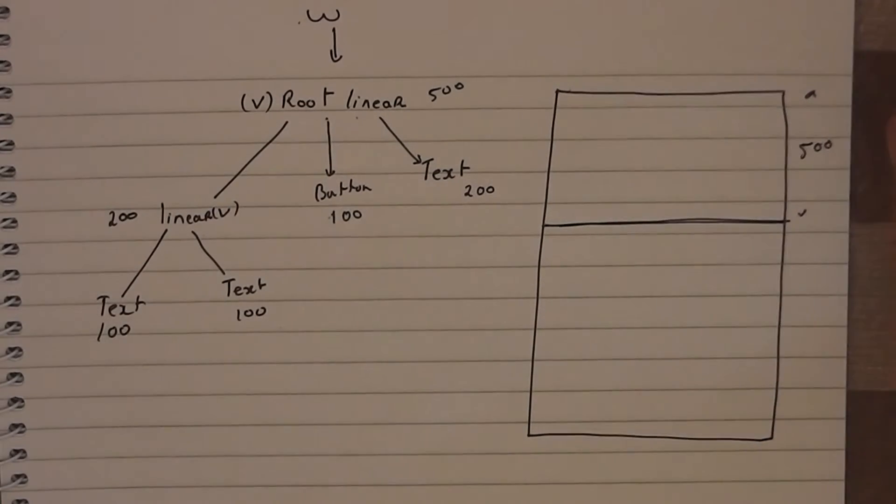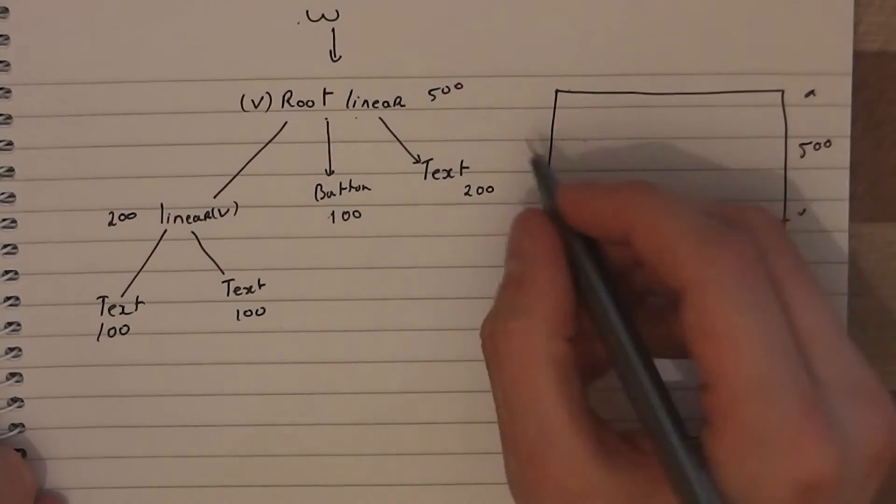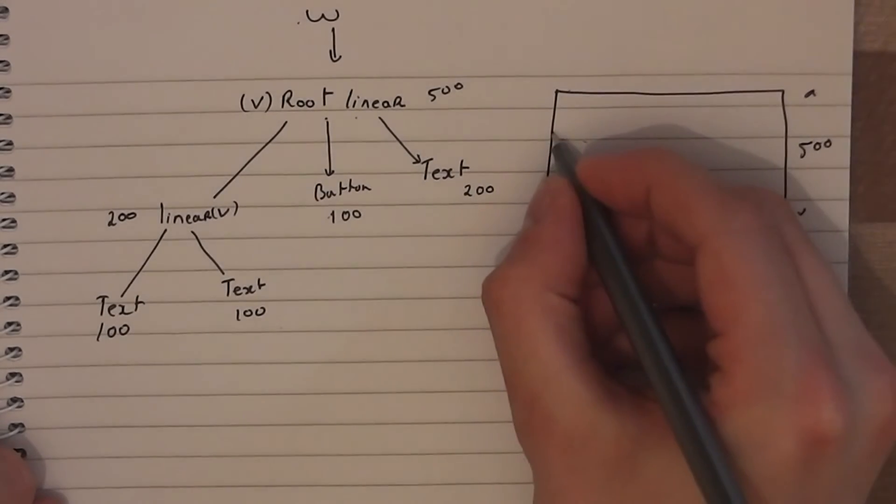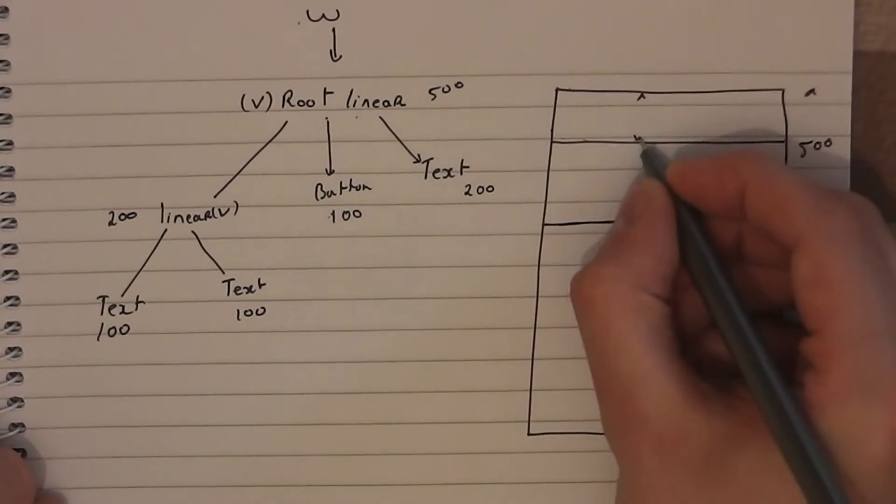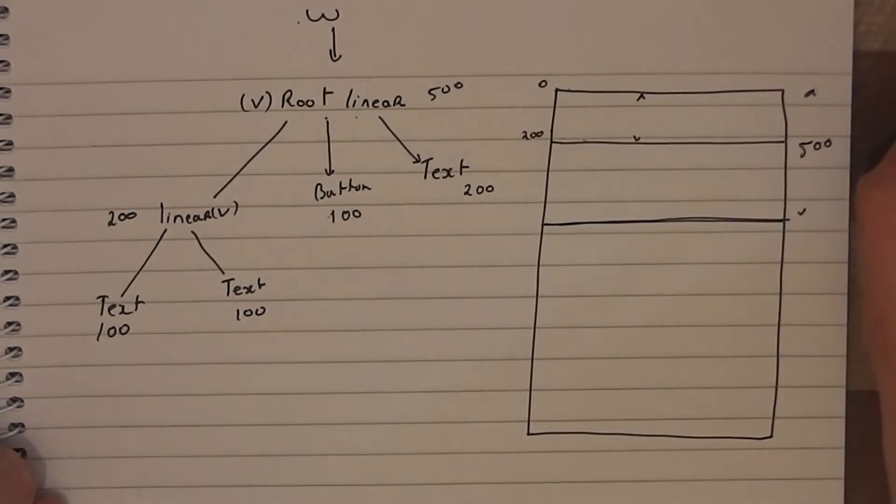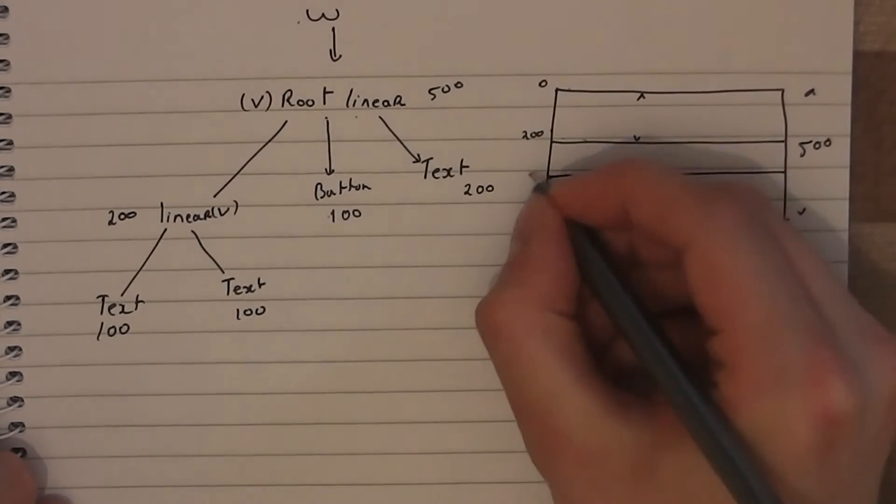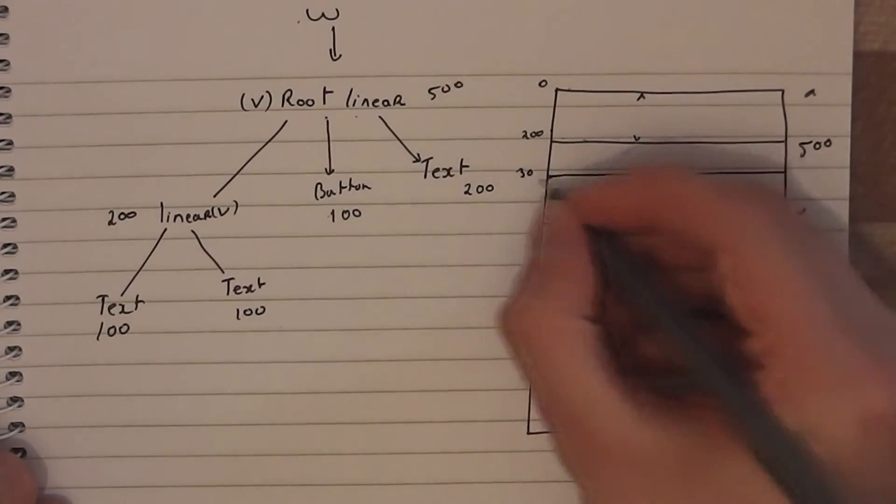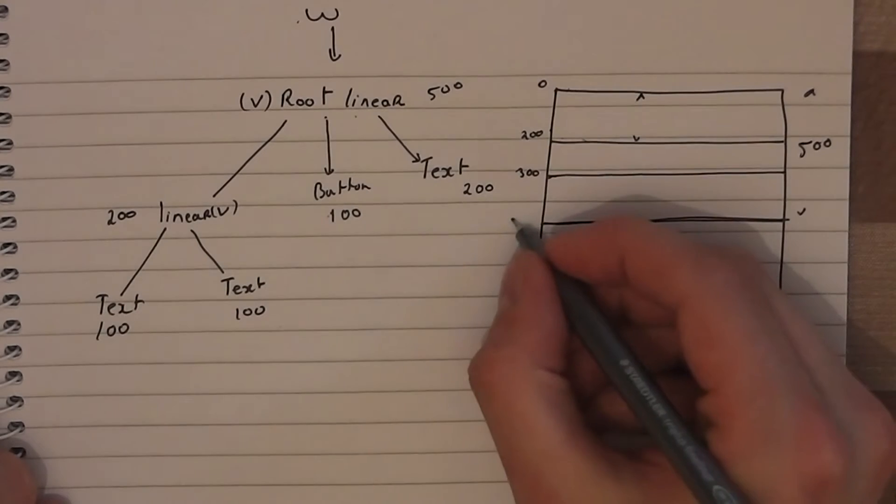Then our root layout goes, I need to position my children. I already know how big they are. Let's stick our positions in. So it goes to the text. Text, you are my first child, I will stack you here, and you are 200 high. So you're going to go from 0 to 200. Then it's going to say button, your frame or your position on screen is here, and you're going to go from 200 to 300. And then the last linear layout is going to go from 300 to 500.